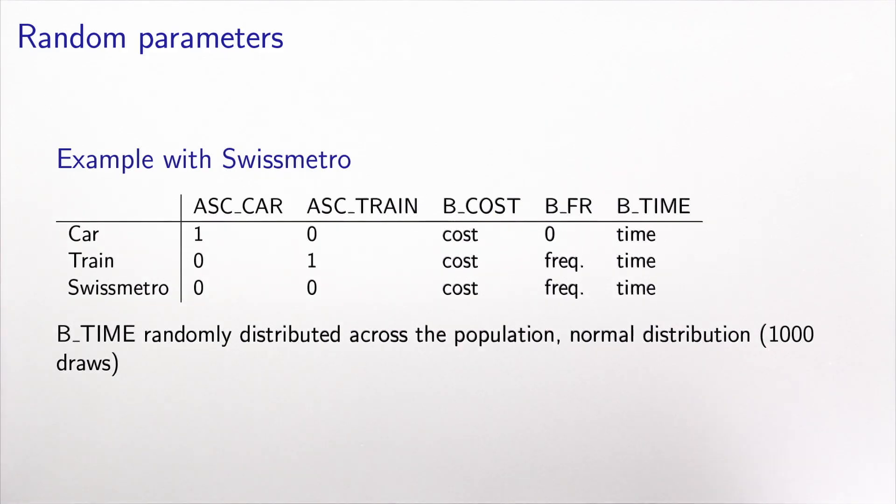Let's look at an example. I'm using, again, the Swiss Metro example with the following specifications. So I have two constants, one for car, one for train. The constant for Swiss Metro has been normalized to zero. I have a generic cost coefficient. I have a generic frequency coefficient for the public transportation alternatives. And I have a travel time coefficient. And now, I will assume that beta_time, the coefficient for travel time, is randomly distributed across the population. As I did in the previous slide, I will assume a normal distribution, and I'm calculating the integral using Monte Carlo integration with 1000 draws.